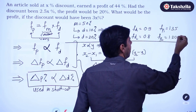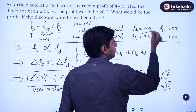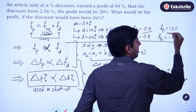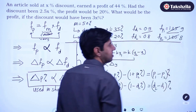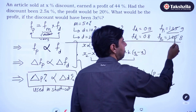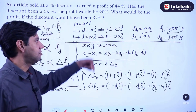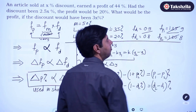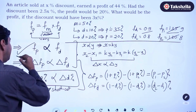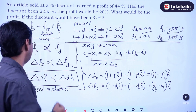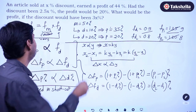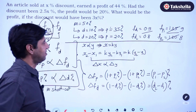Checking the ratios: discount factors are 0.9 to 0.8, which is 9:8. Profit factors are 1.35 to 1.20, which is 135:120 = 9:8. The ratios are the same! This confirms that the multiplying factor related to profit is indeed directly proportional to the multiplying factor of discount when markup remains constant.